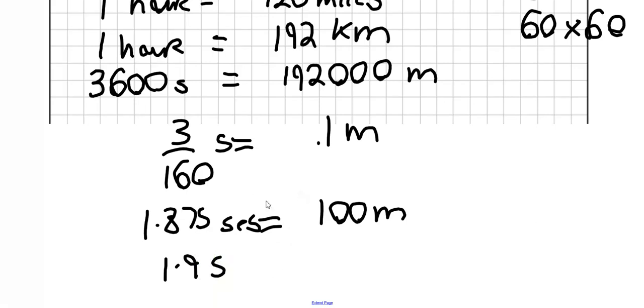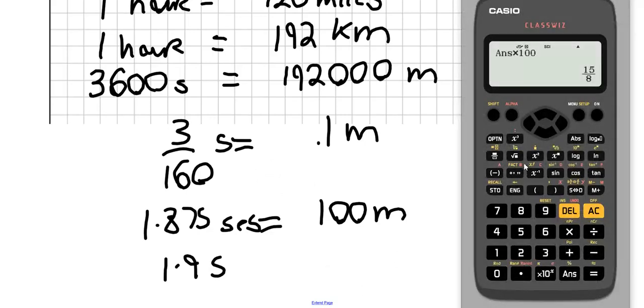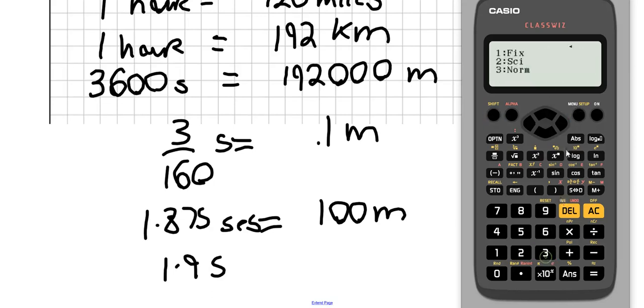To turn your calculator back, do the exact same thing: go to shift, setup, number format, and go back to normal — press normal one.